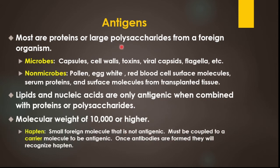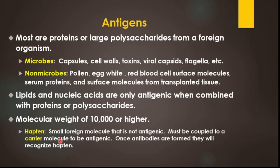Antigens are foreign particles or organisms. The foreign organism can be a complete particle or large polysaccharides; there can also be a microbe, capsule cell wall, toxins, viral capsids, or flagella. Small foreign particles are called haptens — small molecules that cannot produce antibodies until they combine with another protein or carrier molecule.